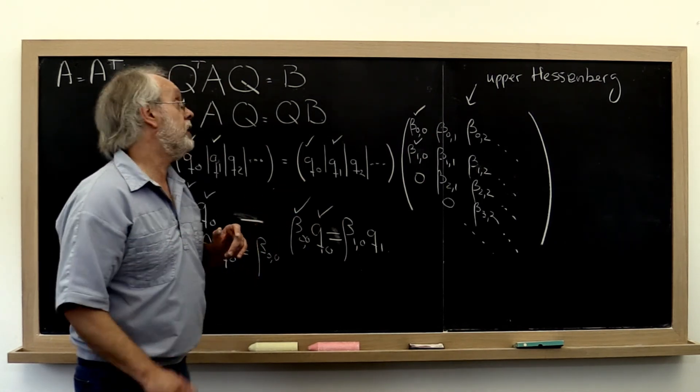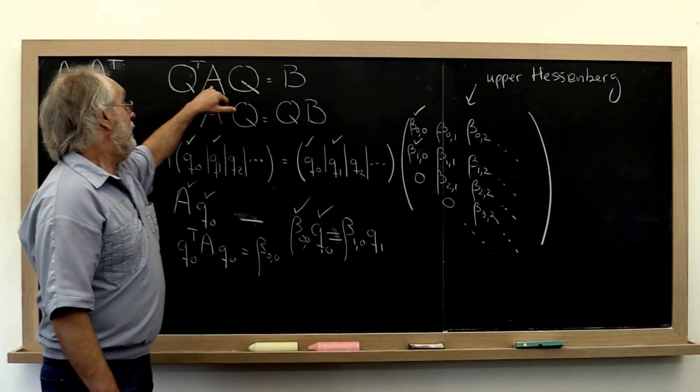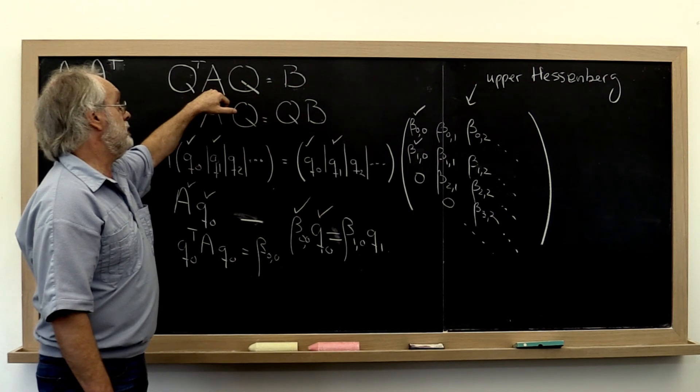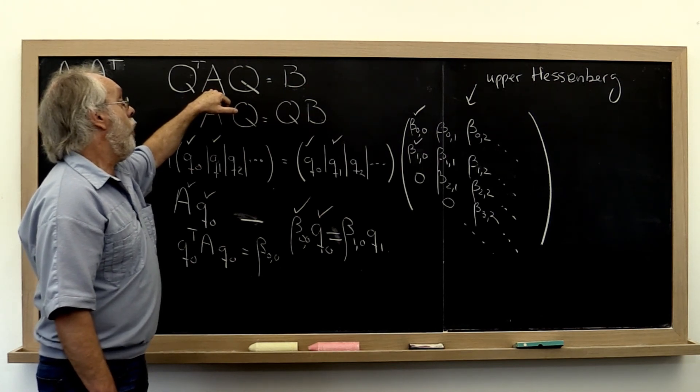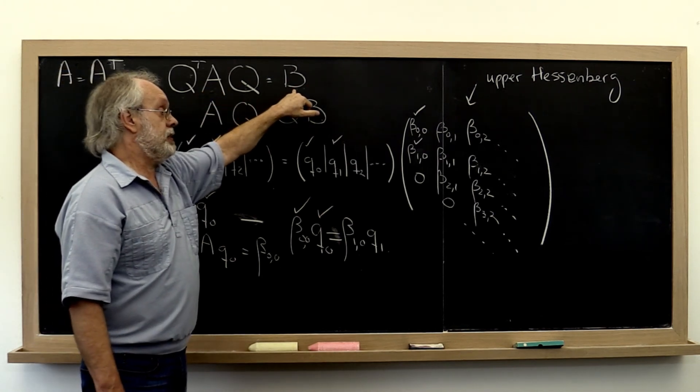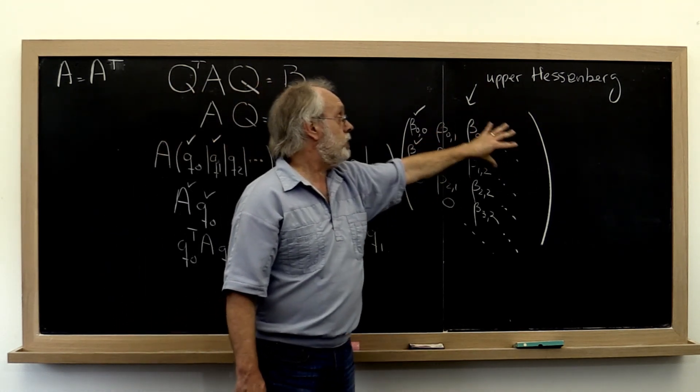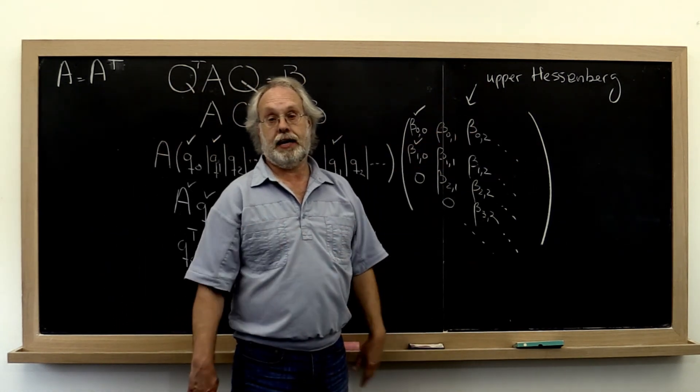Let me just finish by pointing out that if A and B are symmetric, or rather if A is known to be symmetric, then we know that B will be symmetric as well. And therefore instead of getting an upper Hessenberg matrix, we will actually get a tridiagonal matrix.